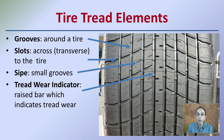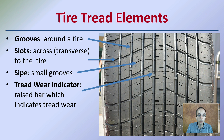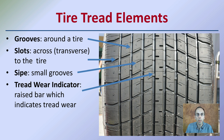Looking at the exterior of the tire, there are grooves which go around the tire. We have slots which are transverse to the tire. We have swipes, which are the small little grooves located here. We also have something called a tread wear indicator — these are raised bars that indicate tread wear, and you will find them on tires, possibly even on your own car.